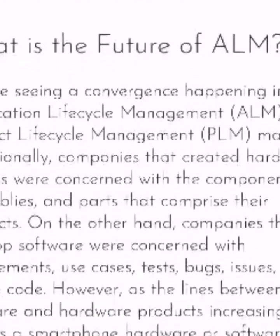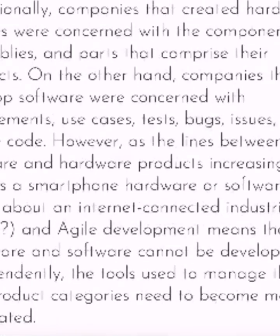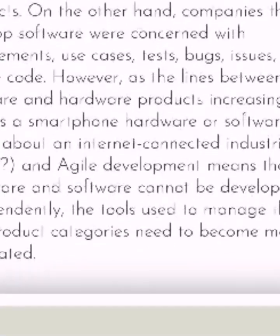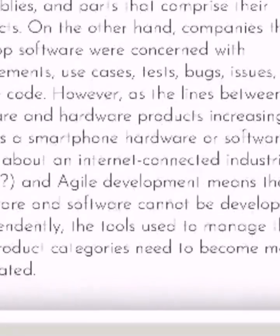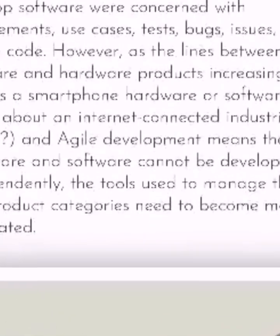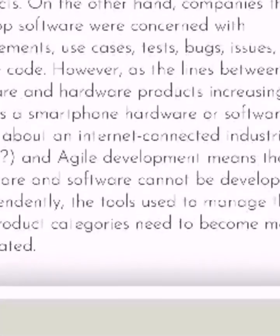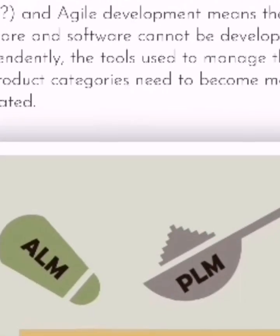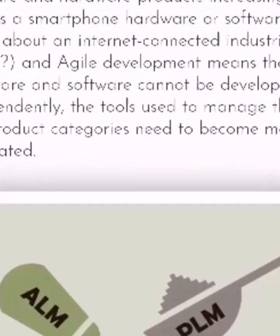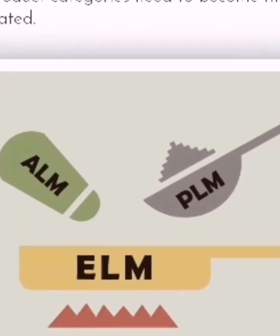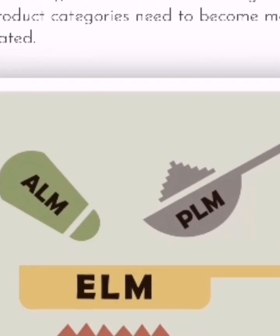What is the future of ALM? We are seeing a convergence happening in the application lifecycle management and product lifecycle management markets. Traditionally, companies that created hardware devices were concerned with components, examples, and parts that comprised their products. On the other hand, companies that developed software were concerned with requirements, use cases, tests, bugs, issues, and source code. However, as the line between software and hardware increasingly blurs — is a smartphone hardware or software? What about an internet-connected industrial sensor? — agile development means that hardware and software cannot be developed independently.